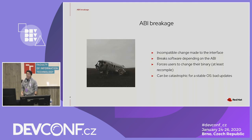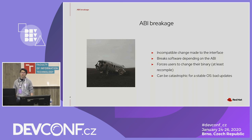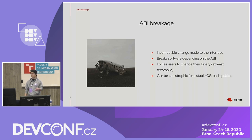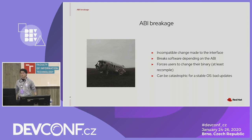What is ABI breakage? It's an incompatible change made to the API, so software depending on that API or ABI will be broken. In the context of an operating system, it would be something like a broken package, and all the packages depending on that broken package would have to be changed — at least recompiled — so they could incorporate the changes and be able to run again.